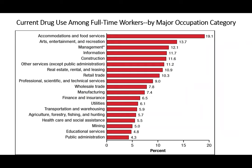Looking at this data in relationship to workplaces, the survey breaks down employed respondents by occupation. Accommodations and food services — the sector hardest hit by the pandemic — also traditionally has the highest percentage of workers who are current illicit drug users, at 19%. That goes down to educational services and in the middle of the pack are retail trade, tech services, and wholesale trade.